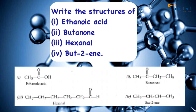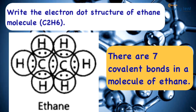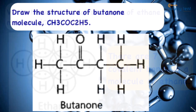Now we have the electron dot structure. We have already discussed the electron dot structure. C2H6 is the alkane — it has a single pair of electrons forming a single bond. There are many covalent bonds in these structures and we need to look at the molecular formula carefully.